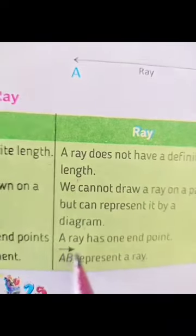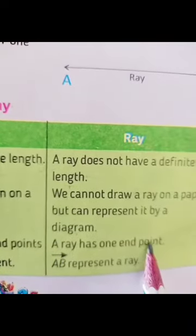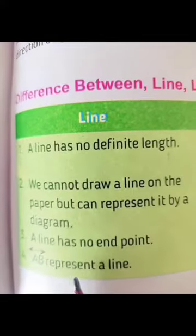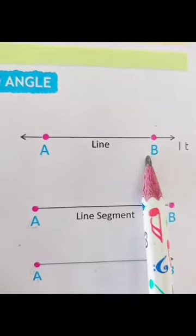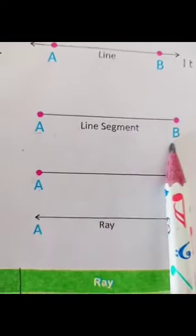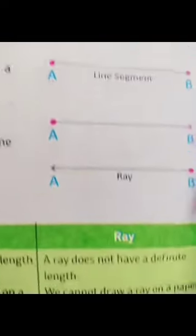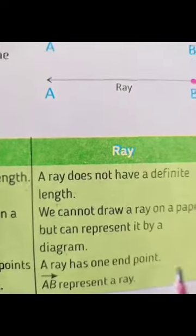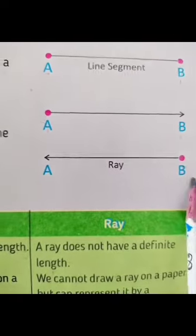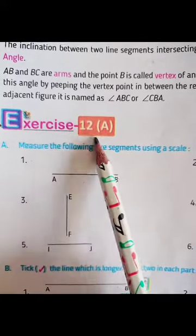A ray has one starting point. AB represents a line. AB represents a line segment, and AB also represents a ray, depending on how it is shown.